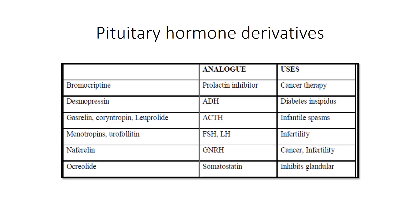What are the various pituitary hormone derivatives and what are their uses? Bromocriptine is a prolactin inhibitor used in cancer therapy. Desmopressin is an analog of ADH, used for diabetes insipidus. Leuprolide is an analog of ACTH, used for infantile spasms.